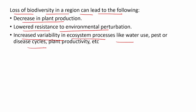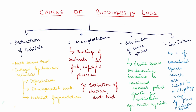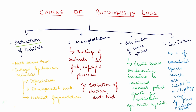We will understand this in the upcoming slides with more examples. If you see the causes of biodiversity loss — what are the causes? First is the destruction of habitats. Habitat destruction is a very serious threat to wildlife. It is the primary cause of extinction — the main primary cause for extinction of species.